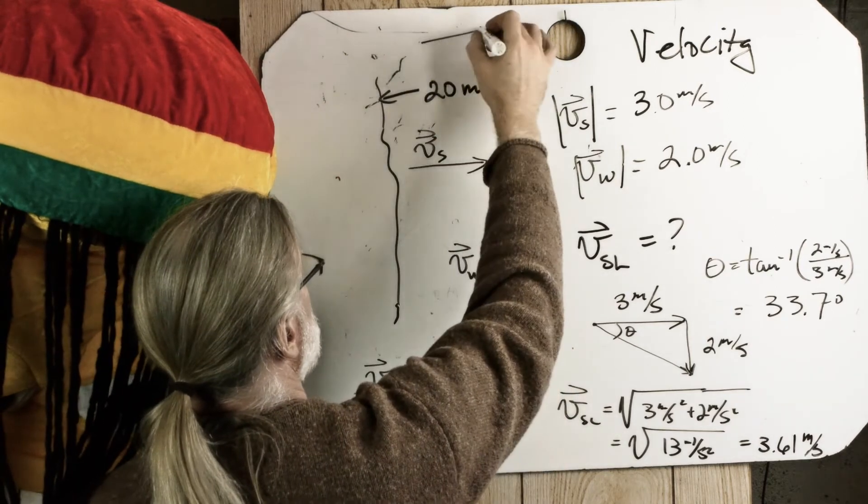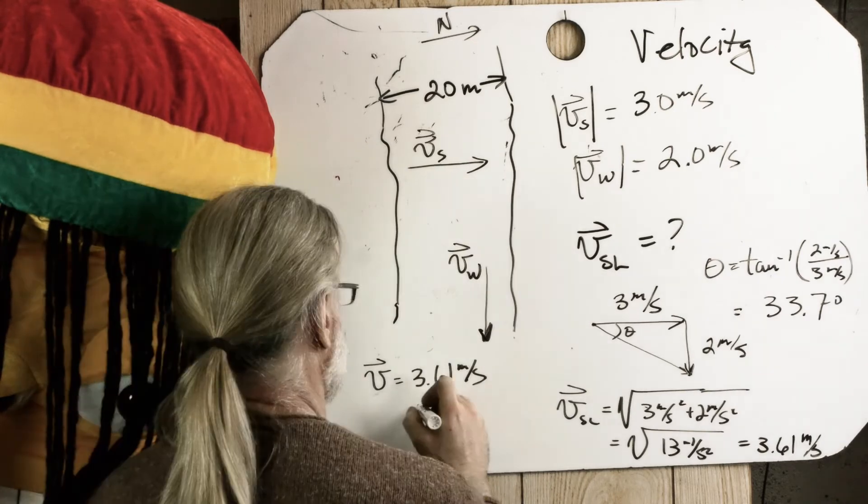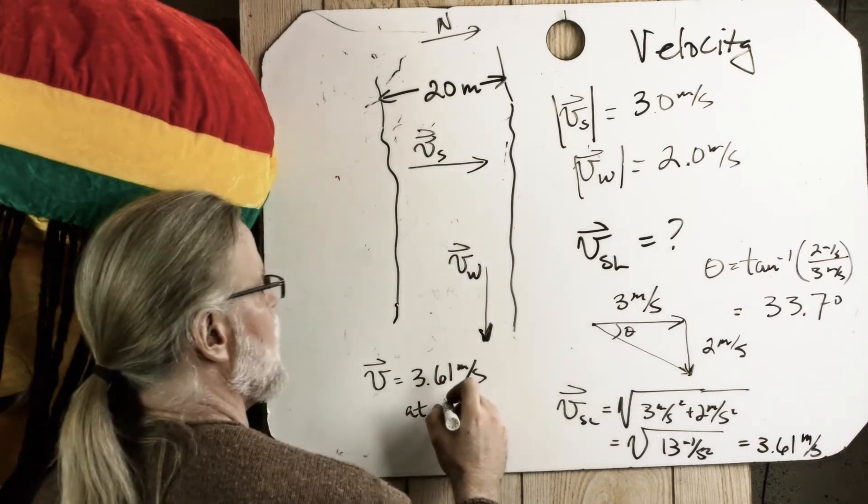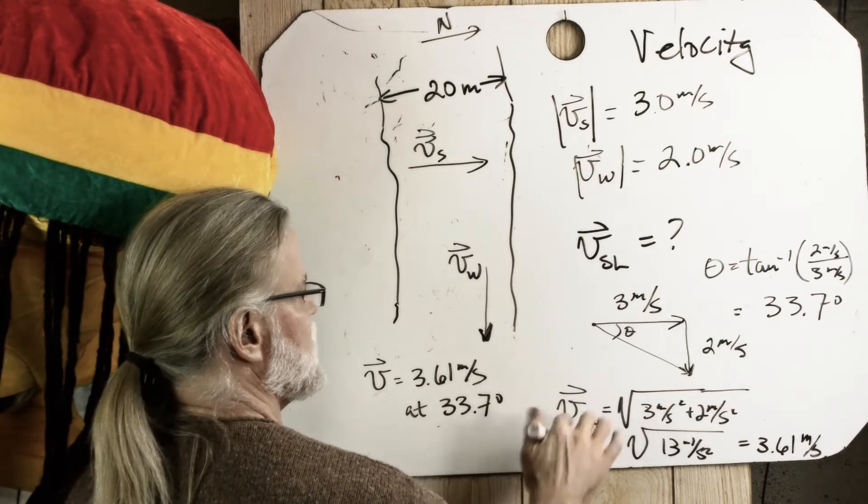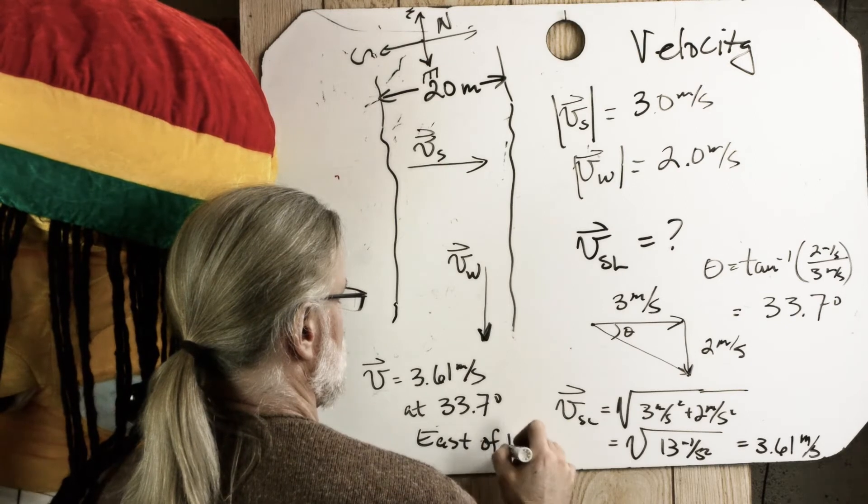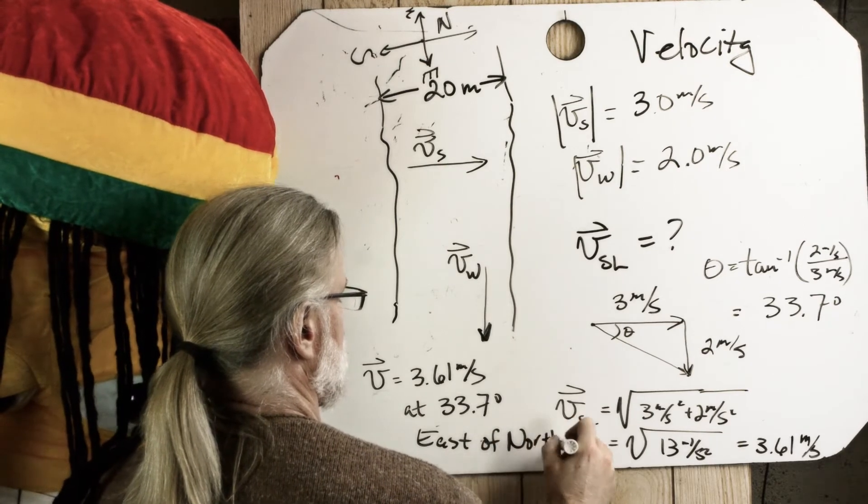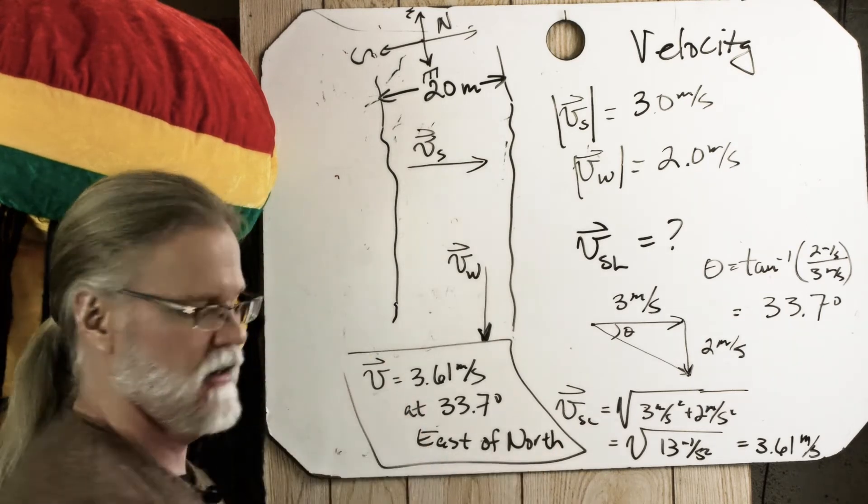So Sally's velocity relative to the land is 3.61 meters per second. Let's say this way was north. We didn't really give a direction, but let's give one now. At 33.7 degrees east of north. The velocity of Sally relative to the land.